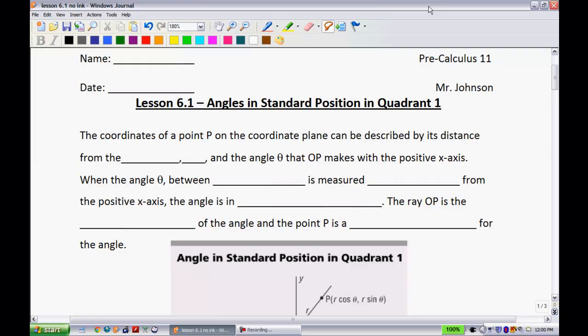Alright, this is lesson 6.1, Angles in Standard Position in Quadrant 1. This is the first lesson from Unit 6 on Trigonometry. In this unit, what we're going to be doing is dealing with a lot of things we did last year on sine, cosine, and tangent, those ratios, and building up to learning about what the sine law and cosine law are about.